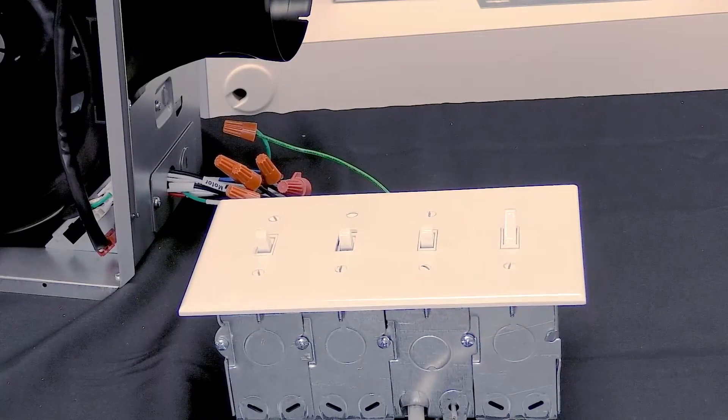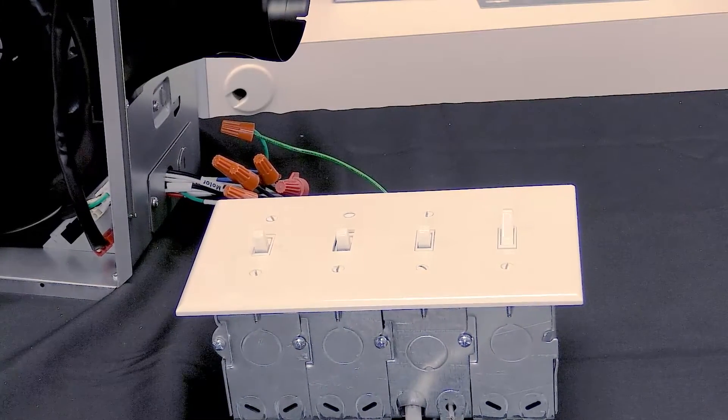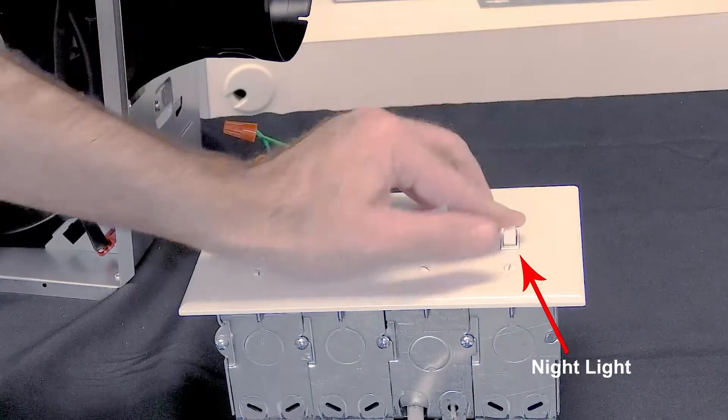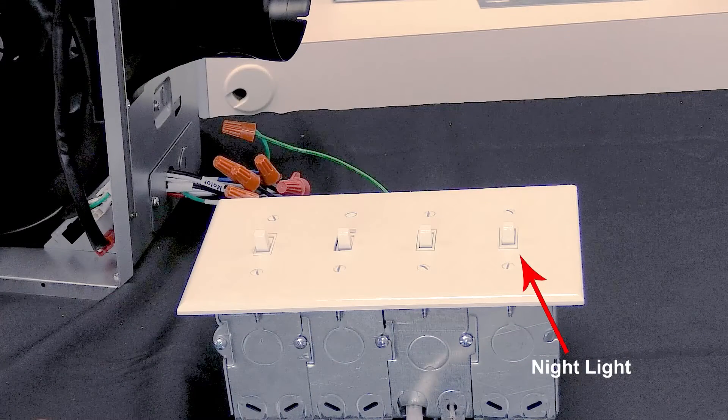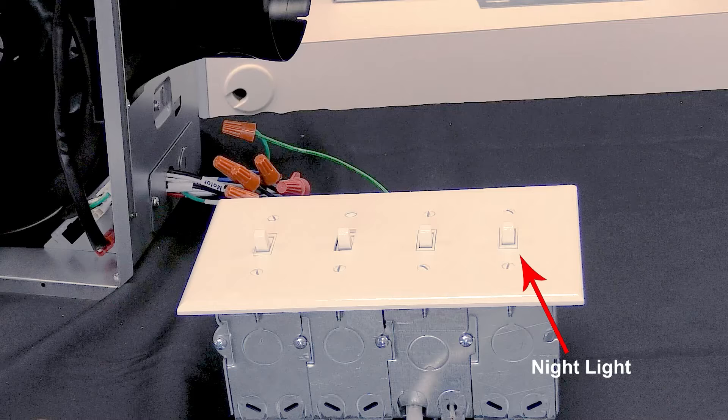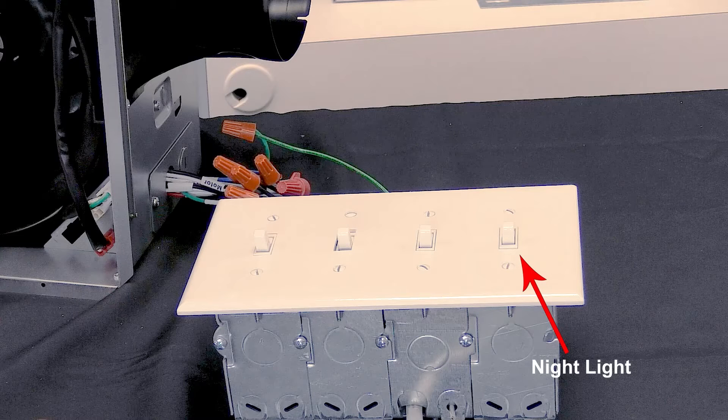The final switch you see here is the night light. This switch operates independently. The night light would be a good feature for a timer if desired to only come on at night. This example shows the night light on the standard switch.